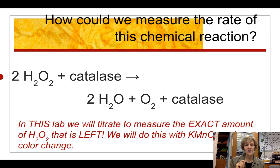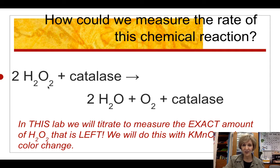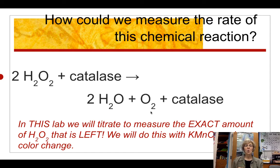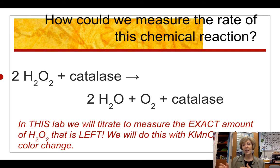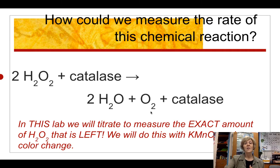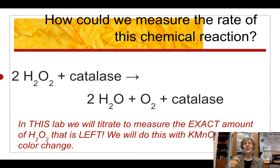How could we measure the rate of this chemical reaction? We have three options: measure how much H₂O₂ is left at the end, measure how much water is produced, or measure how much oxygen is produced. I have oxygen probes in my lab that could measure oxygen produced over time to give the rate. I also have gas pressure sensors — if the reaction were done in a closed vessel, a gas pressure sensor could measure the increase in pressure as oxygen is produced.